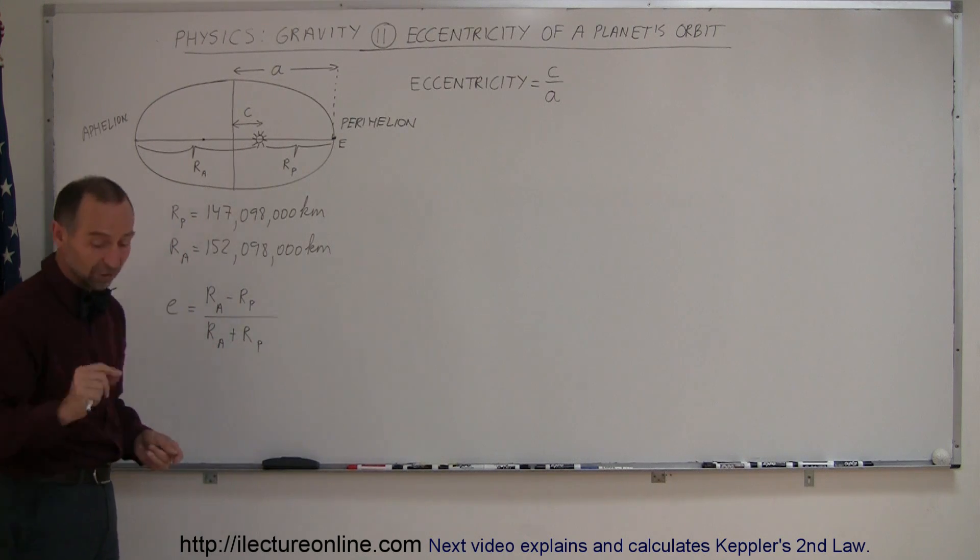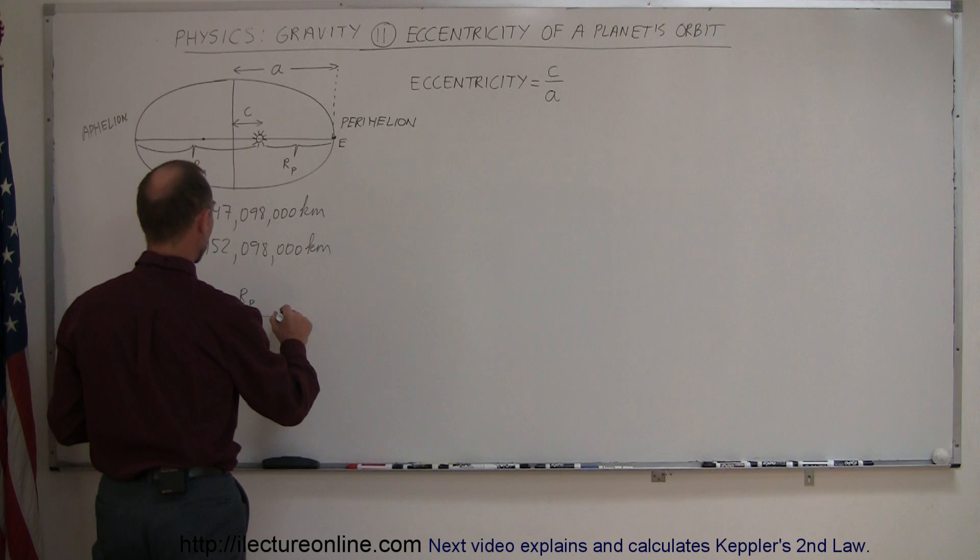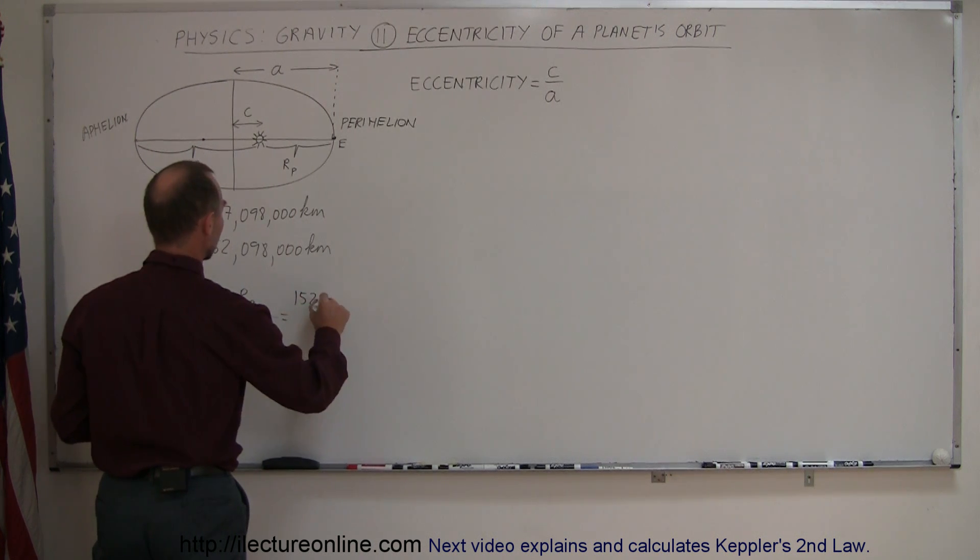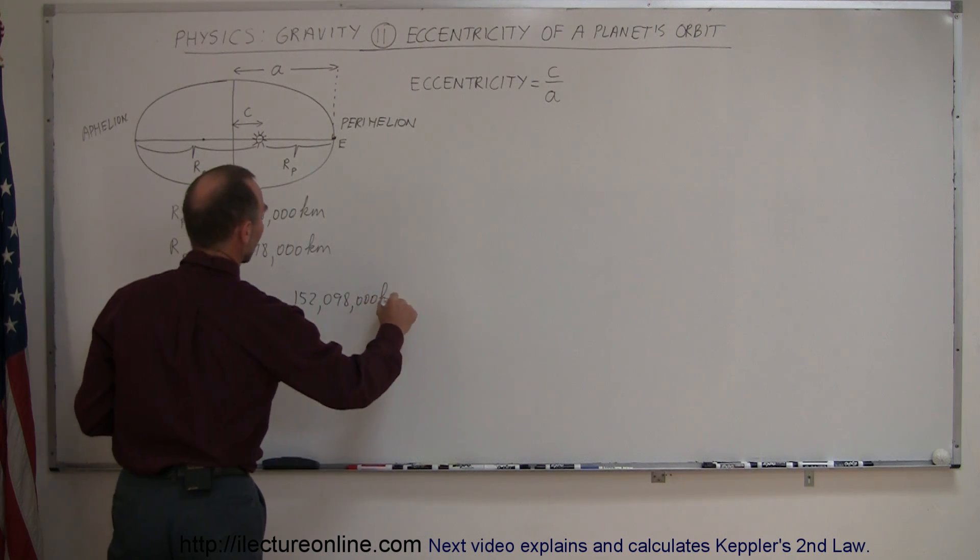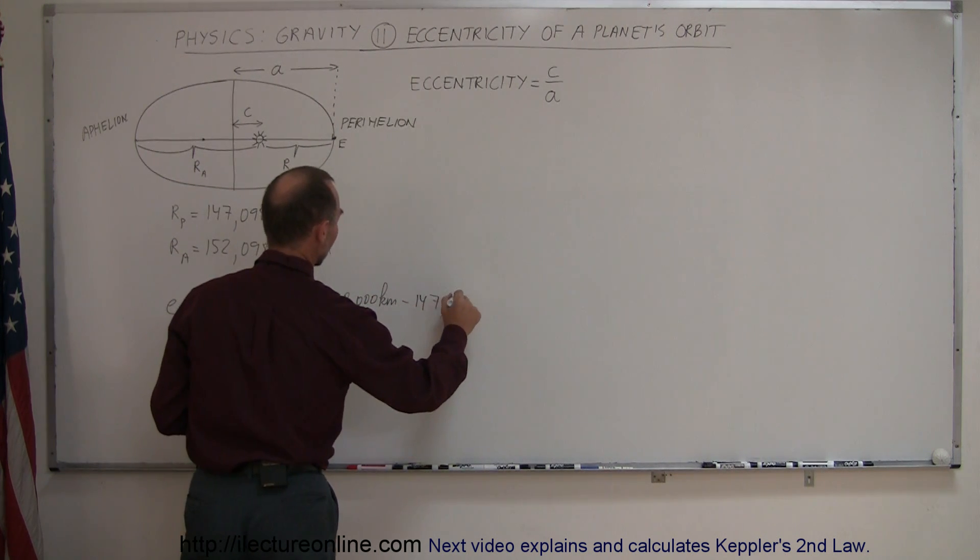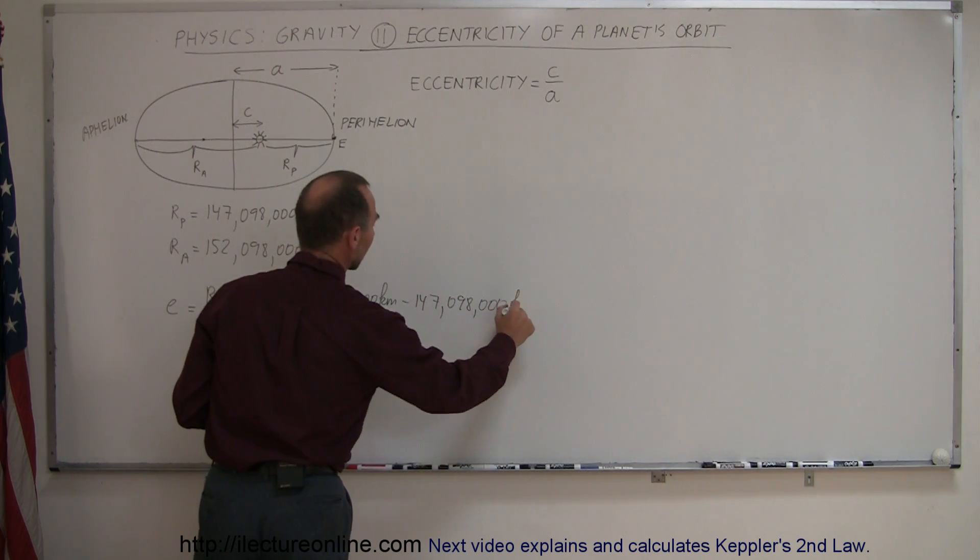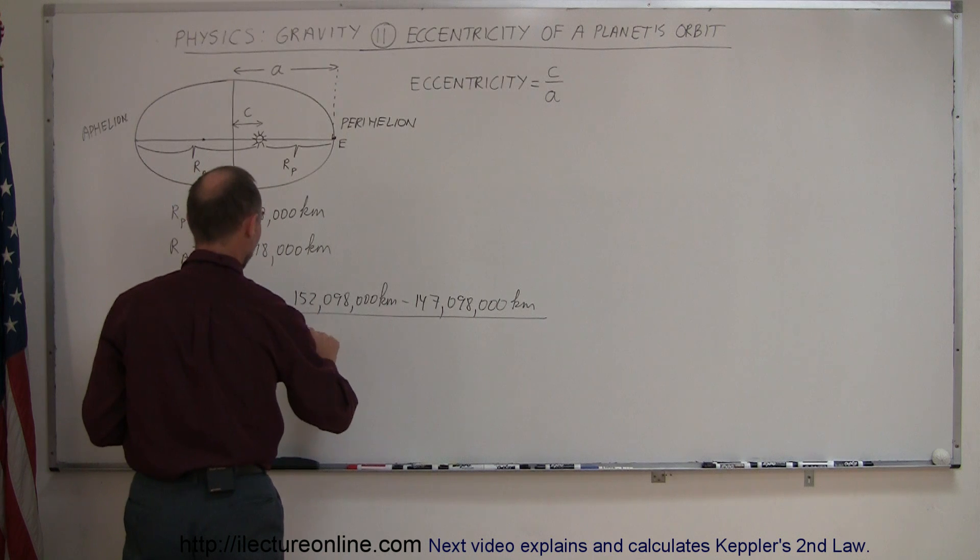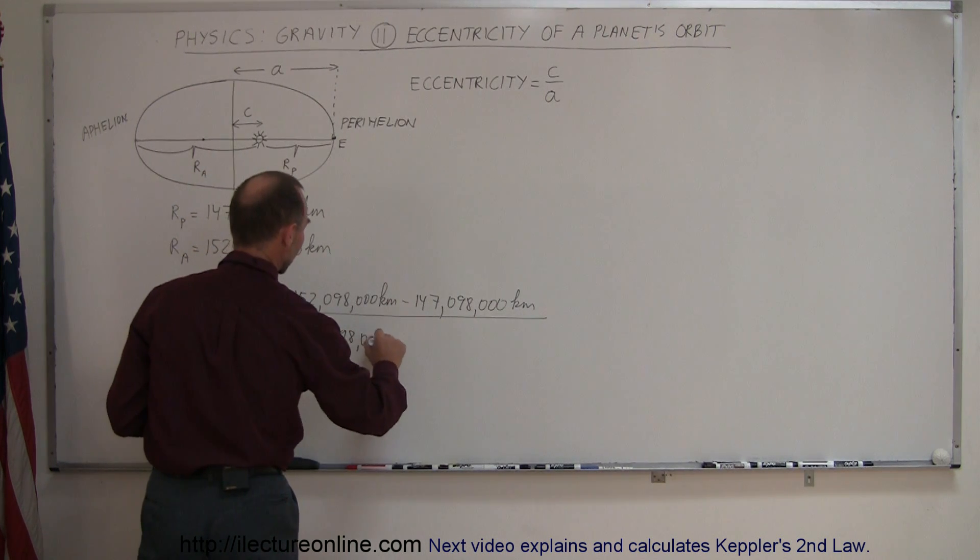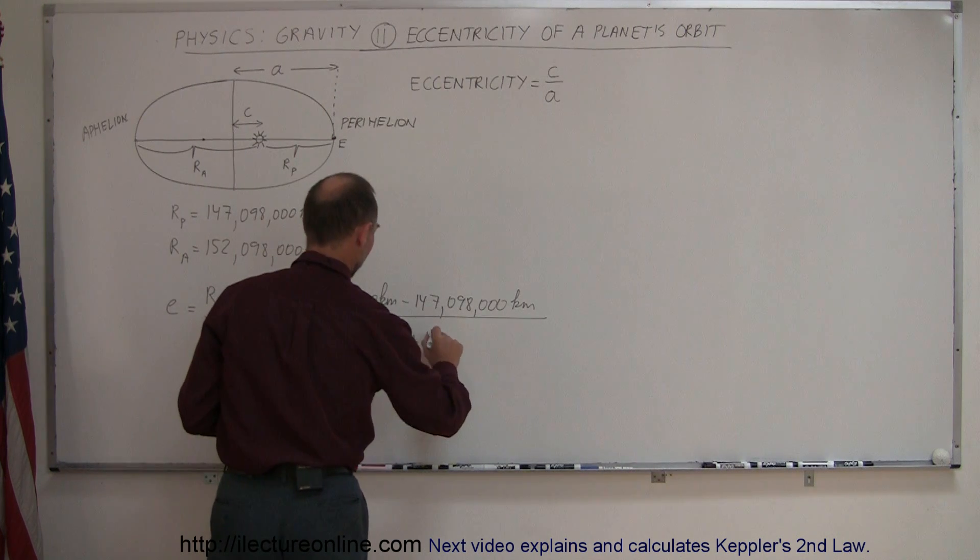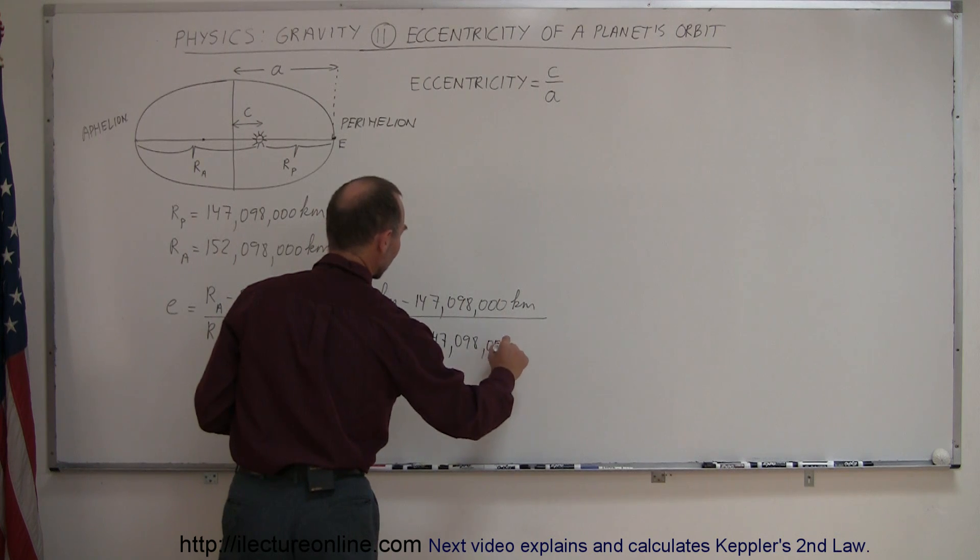Let's go ahead and plug in those numbers and see what we get for the eccentricity of the earth's orbit. For R sub A, we get 152,098,000 kilometers minus 147,098,000 kilometers.